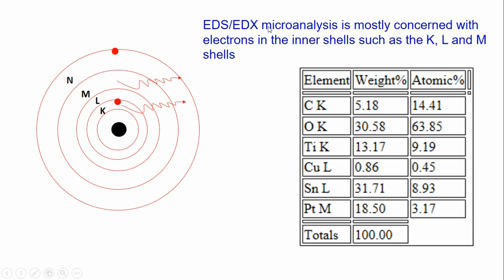EDS and EDX microanalysis is mostly concerned with electrons in the inner shells such as K, L, and M. In most cases you will see only these three shells. This is because we need the electron to go inside the atom and remove an electron from the inner shell, not the outer shell, because we need to know the elemental composition — and from there we can get information about how many elements are present.